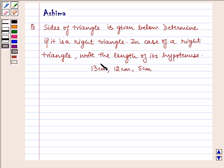In case of a right triangle, write the length of its hypotenuse. We have the sides as 13 cm, 12 cm, and 5 cm.